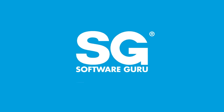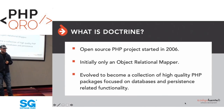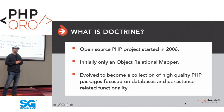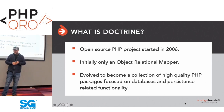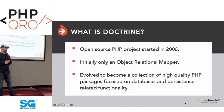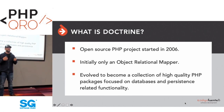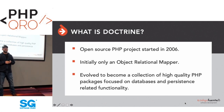Doctrine started around 2006. It was initially developed by a guy in Eastern Europe, and about three months after he started it, he abandoned it. Several other people, including myself, picked up the project and continued working on it. Originally it was just an object-relational mapper, but over the years it grew into a general ecosystem of a variety of different types of packages for PHP.